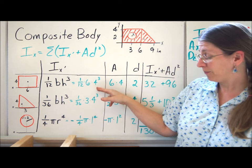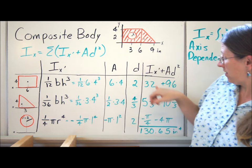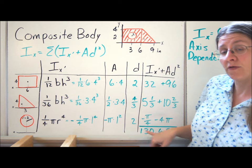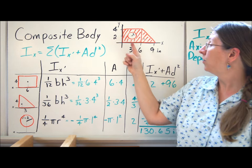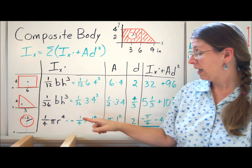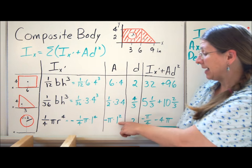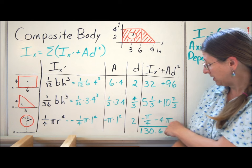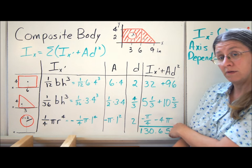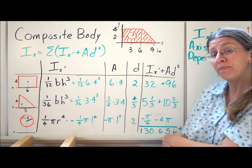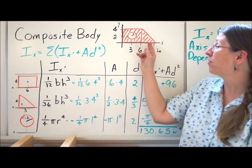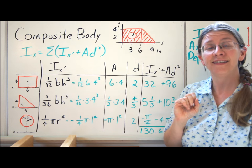Plugging these in, what I end up with is 130.65. Be really careful. This is a hole. Any time you have a hole, you have a negative moment of inertia, and a negative area. So both of these numbers over here are negative. But once you've got them, all you have to do is add them up. And that gives you your moment of inertia for that cross-section.